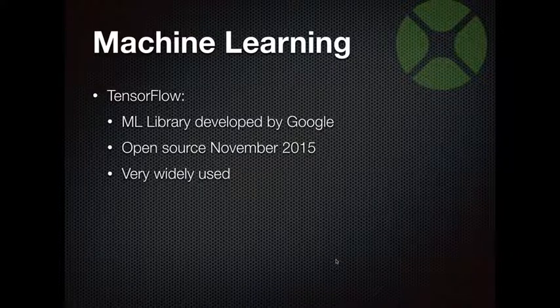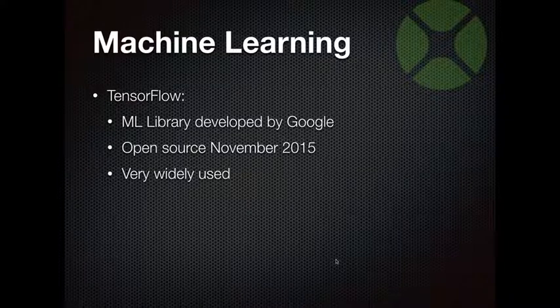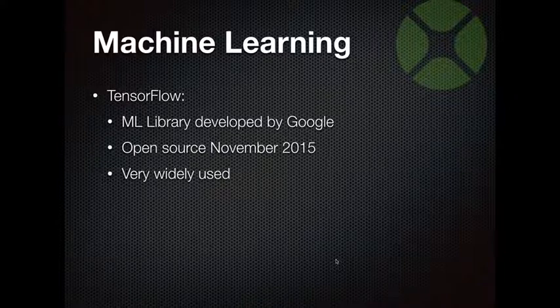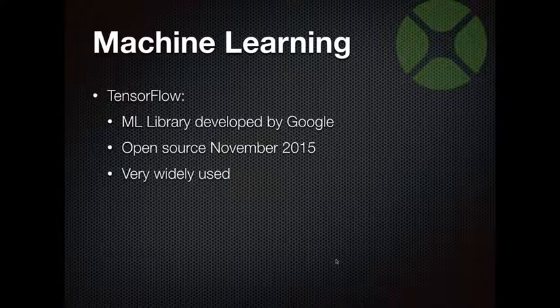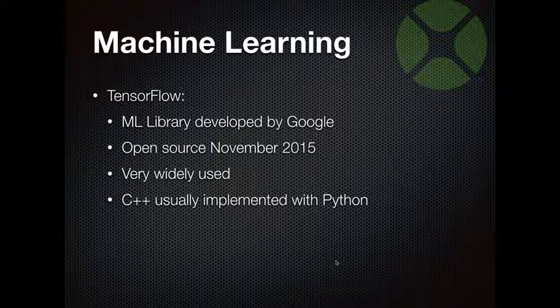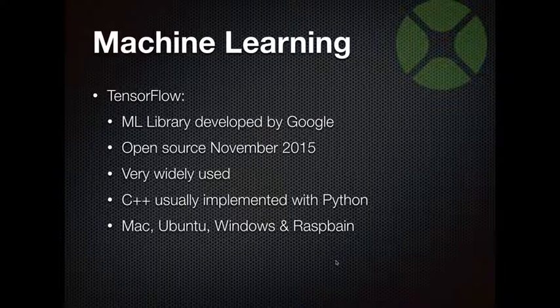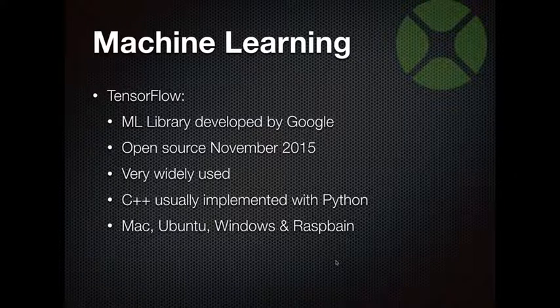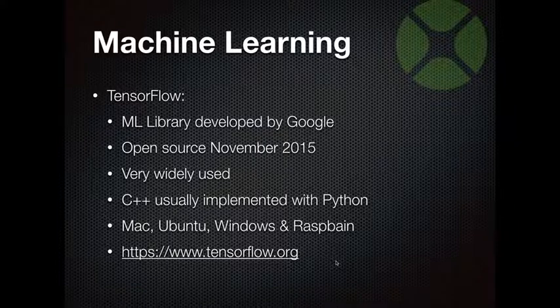Based on Gartner and similar research, TensorFlow appears to be well over 50% of the marketplace. IBM, Amazon, and Google all offer TensorFlow services. The AlphaGo project — where they taught a computer to play Go — was done with TensorFlow. It's written in C++ but typically implemented with Python, and you can download it for Mac, Ubuntu, other Linux distros, Windows, and even Raspbian. For more info go to tensorflow.org.